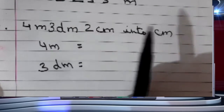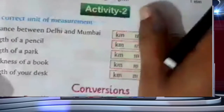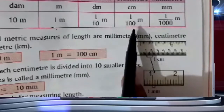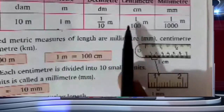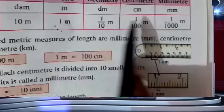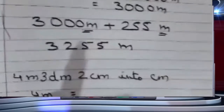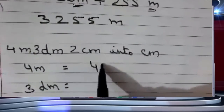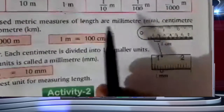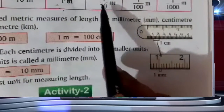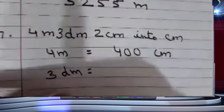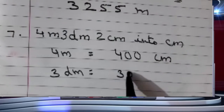First of all I have to convert 4 meter into centimeter. See this is my chart. This is meter and this is centimeter. From meter to centimeter, I am going in the right direction only. I count 1, 2 — so I take 2 jumps and multiply by 100. So 4 meter will become 400 centimeter. Next is 3 decimeter. From decimeter to centimeter is just one jump, so I multiply by 10. So it will become 30 centimeter.